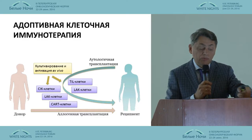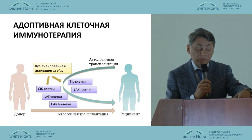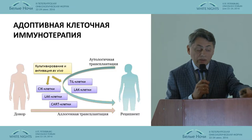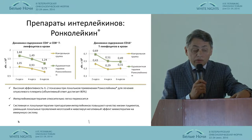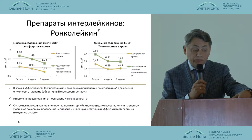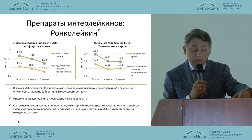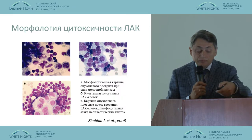Immunocellular therapy is about activation of the immune system and injection of cells into the patient's body. Those are lymphocytes activated by interleukin-2 or cytokine cocktail, the so-called genetically modified cells, as well as TIL lymphocytes. Adaptive immunotherapy started from the discovery of interleukin-2, and in Russia it has been substituted by the domestically produced medication Roncurleukin.